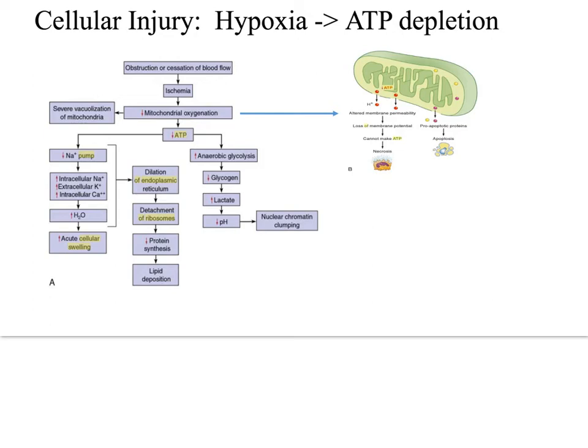Let's talk about cell response to injury. When a cell responds to injury, it's not an all-or-nothing type of phenomenon. The longer and stronger the stimulus is on the cell, the larger the amount of damage. But regardless of the injurious agent, there are common biochemical themes important to understand. We'll talk about hypoxia and reactive oxygen species and free radical injury first.